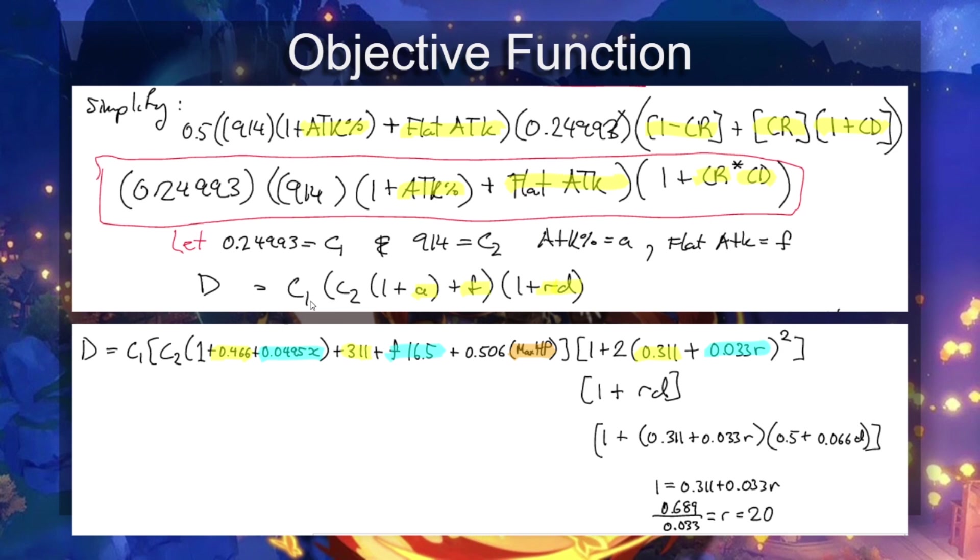Further simplifying the objective function, we can get it into a form where at the bottom here we've got the damage, and then there's two constants: C1 and C2. C2 is the base attack. C1 is literally everything else that doesn't matter. And then we've got four variables here: attack percent, flat attack, crit rate, and crit damage. Hu Tao's HP scaling is going to increase the flat attack, and these other ones are going to be affected by substats.